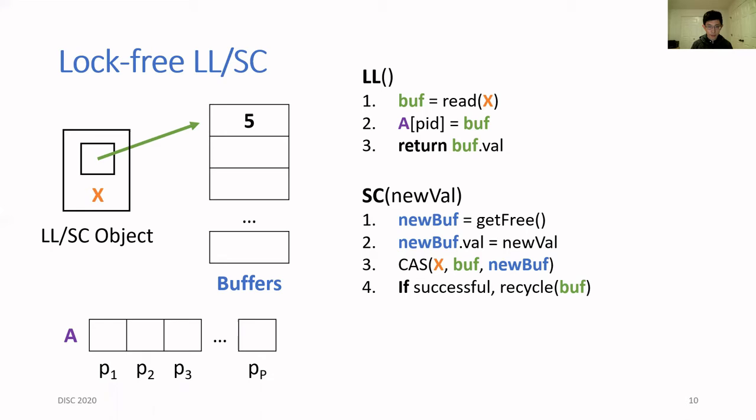For memory reclamation, if the compare-and-swap succeeds, then you recycle the old buffer that X pointed to before your CAS. I won't go into too much detail about how the recycle method is implemented, but it basically maintains a list of buffers to recycle. Once in a while, it scans the announcement array and frees any buffer that is not announced.